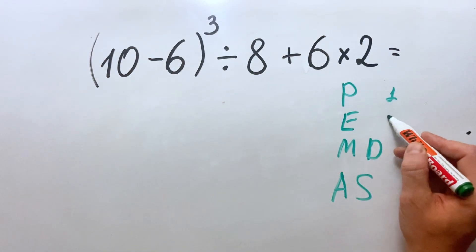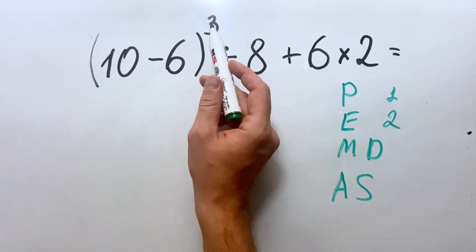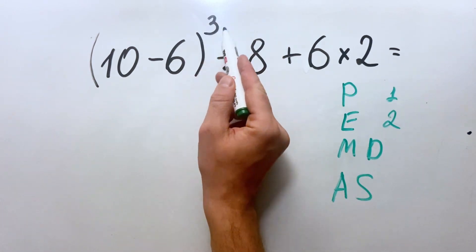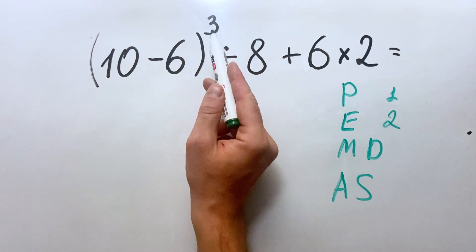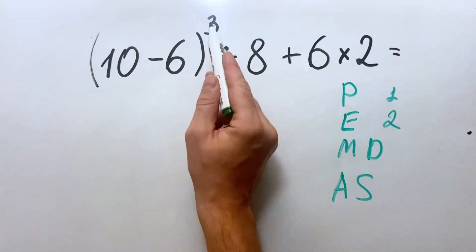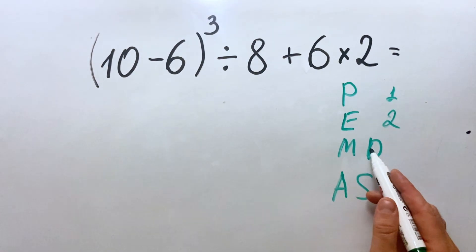E stands for exponents. We must do it in the second place. We can see here we have one exponent which is cubed, so all the result of this parenthesis should be cubed. Then we have multiplication and division.